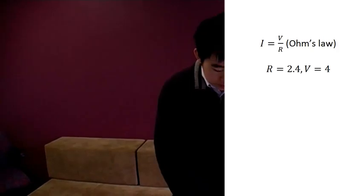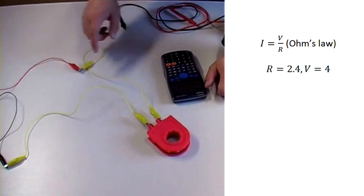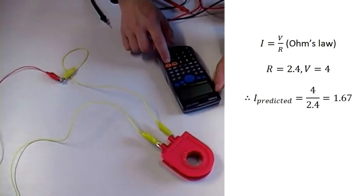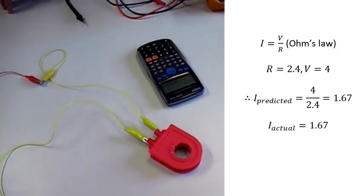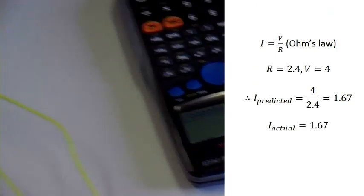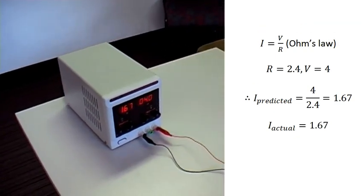Now if I make I the subject, because I is actually the dependent variable. How much current you get through the coil depends on how much volts you're pushing through the coil. So if we make I the subject, it's I equals V on R. According to our resistance reading of 2.4 ohms that we measured before, if we push 4 volts through, 4 divided by 2.4, we should be getting 1.67 amps.